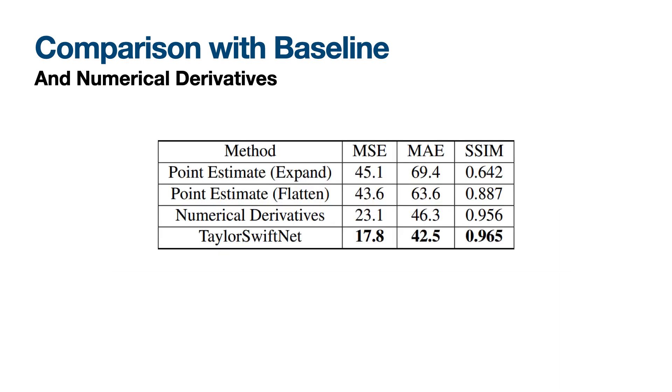Flattened version flattens the given hidden embedding using three convolutional layers and upsamples it using three conv transpose layers. In addition, we evaluated Taylor SwiftNet using the numerical derivatives instead of DC blocks. Table shows that our approach gets the best results in comparison to all baseline models and numerical derivative approach.